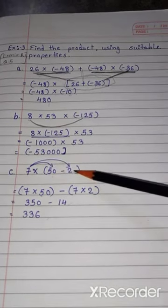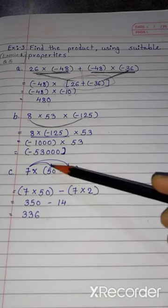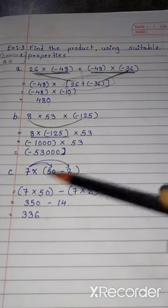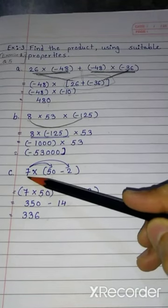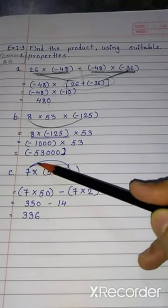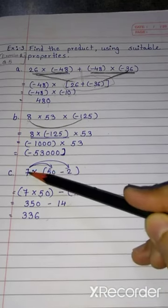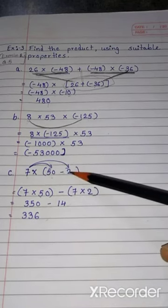Third sum. 7 into, in the bracket, 50 minus 2. Here we have bracket and here we have one number separately. So, first we will multiply 7 with 50, then minus, and then again 7 into 2.